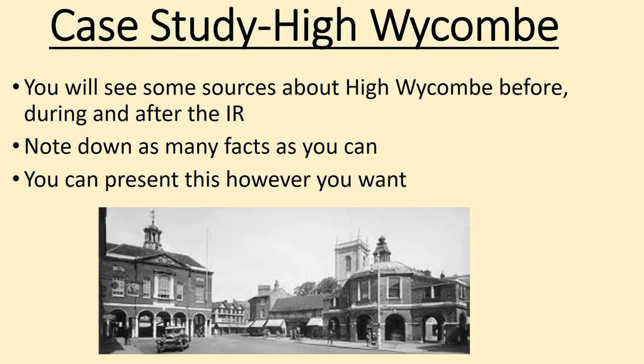Now that we've learned about what the Industrial Revolution was like in general, we're going to look at what it did to High Wycombe, something we're all very familiar with. On the next slide there are going to be some sources about High Wycombe before, during, and after the Industrial Revolution. You need to note down as many facts as you can — as a minimum, one fact per source, but if you're aiming high, why not push yourself to two or three facts per source?